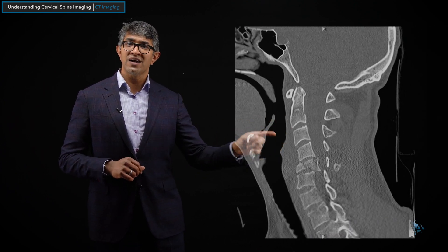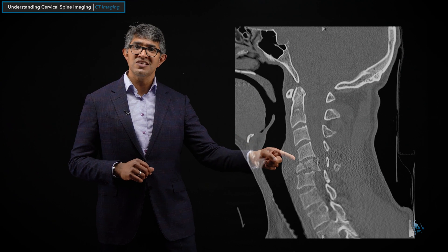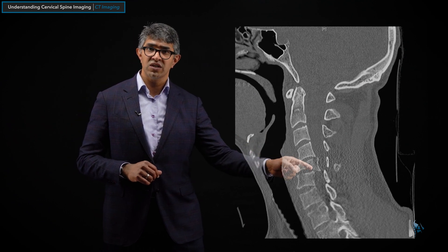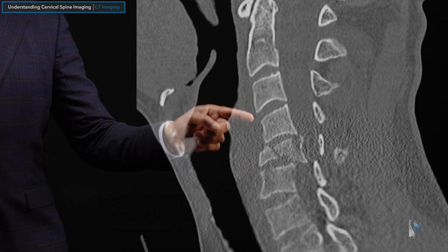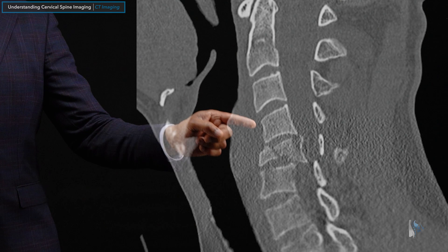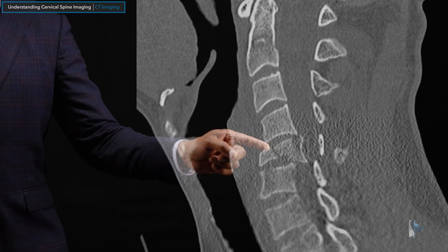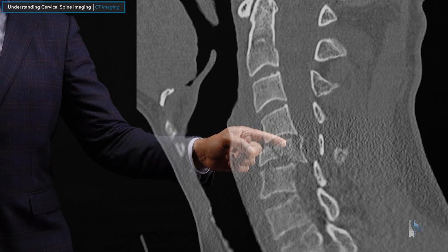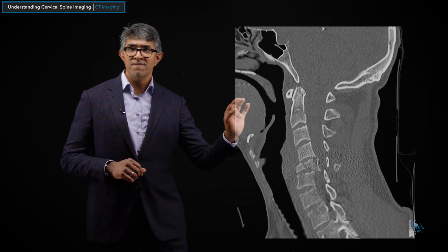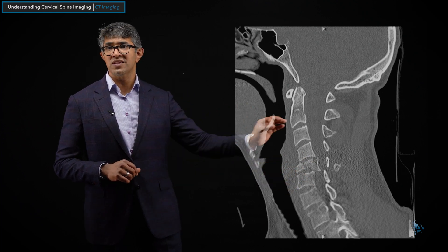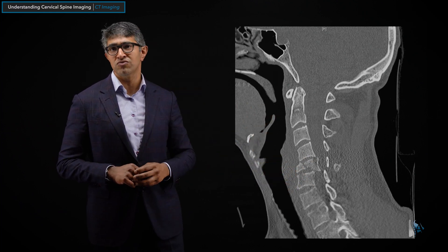Similarly, if you look at this person, they had an unfortunate fracture in the C5 vertebral body. You can see that usually the vertebral bodies themselves are rectangular in shape. This one is fractured and parts of it are actually encroaching on the spinal canal — an unfortunate situation that can cause pretty severe spinal cord injury.